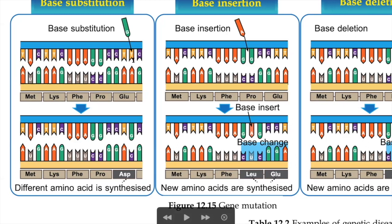So now, T has been changed to G, so G appears and pairs with C. Normally, to produce glutamic acid (GLU) you need GAA, but because C has changed here, a different amino acid — ASP (aspartate) — is synthesized instead. This causes a problem with the protein because the amino acid sequence is wrong. Instead of the sequence MET-LYS-PRO-GLU, you get MET-LYS-PRO-ASP due to the gene mutation.